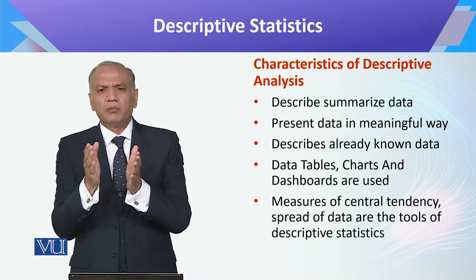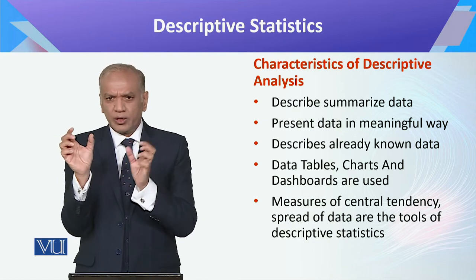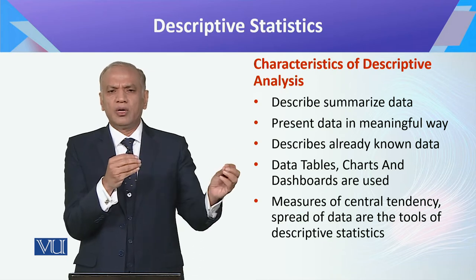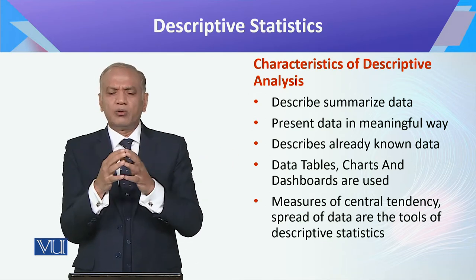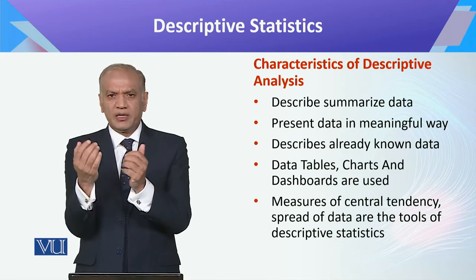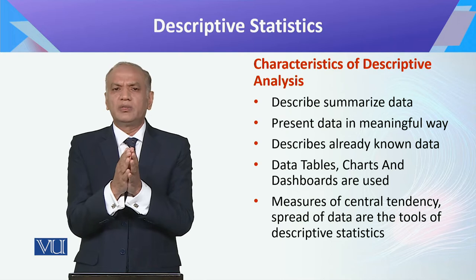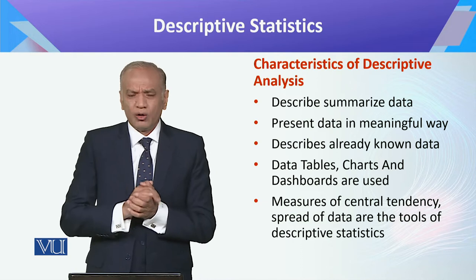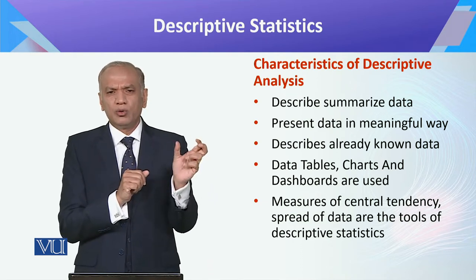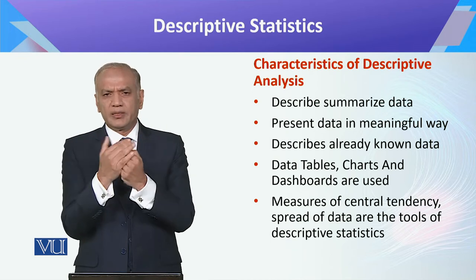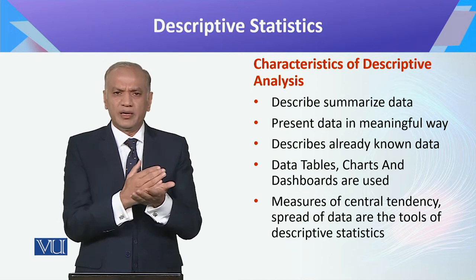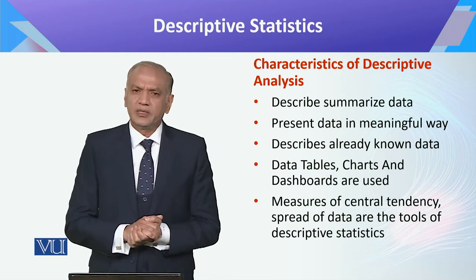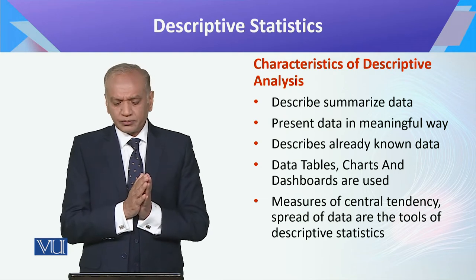A blood report is a good example — ranges are different for different measures. From that report you can tell whether a person's sugar level, white blood cell count, or hemoglobin are within the normal range or not. If they are normal, no further study is needed. If HbA1c is high, that tells you something — all of these facts are derived from already-collected data.